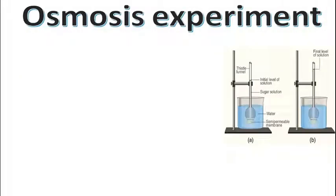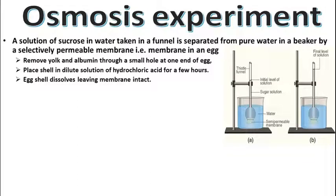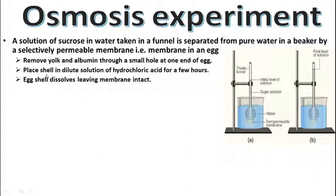Osmosis experiment — इसके अंदर osmosis experiment का setup देख सकते हैं। A solution of sucrose in water taken in a funnel is separated from pure water in a beaker by a selectively permeable membrane — जैसे egg membrane। Egg membrane निकालने के लिए egg yolk और albumin को बाहर निकालते हैं, एक side में small hole करके। उसके बाद जो shell बचे है उसको dilute solution of hydrochloric acid से treat करते हैं, और उस membrane को funnel के mouth पे बांध देते हैं, जो selective permeable membrane का काम करती है।